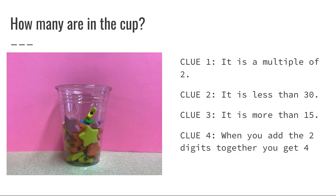Clue four: When you add the two digits together, you get four. So that means however many erasers are in that cup, it's a two-digit number. When you add those digits together, you get four.